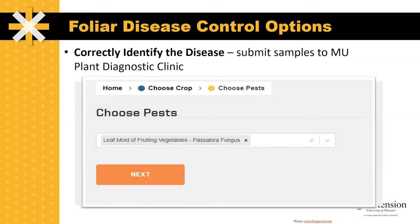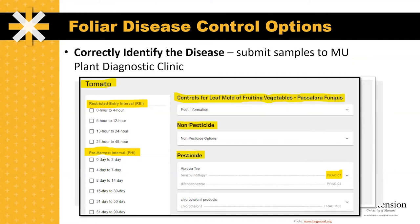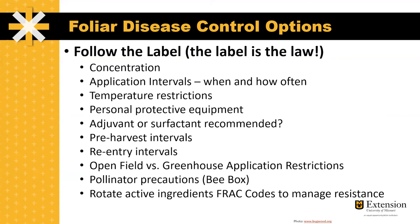You can pick your crop, pick your disease, and then get tons of information on control options. This information can be sorted based on the restricted entry interval time as well as the pre-harvest interval time. It will also list non-pesticide options, which includes some of the preventative control measures mentioned previously, as well as pesticide options targeting the specific organism on the tomato crop. The FRAC code is important to understand in managing resistance to fungicides of different disease-causing organisms. It's important to rotate fungicides that have different FRAC codes so that you don't build up resistance to these materials. It's always important to follow the label and make sure that you're following guidelines on concentration as well as application intervals.